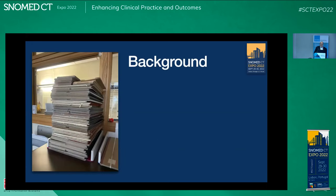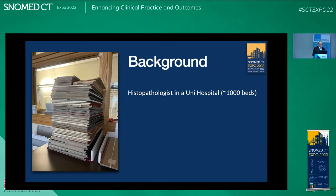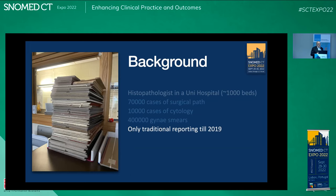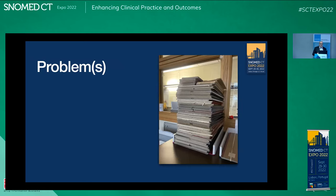What is the background? I am a practicing histopathologist in a university hospital of between 1,000 and 1,200 beds, depending on the COVID situation. We have about 70,000 cases of surgical pathology, 10,000 cytology, and 400,000 gynecytology. We are one of three centers in the UK to deal with gynecology specimens. We only had traditional-style reporting using a microscope and laboratory information management system until the end of 2019, when COVID came and everything changed.